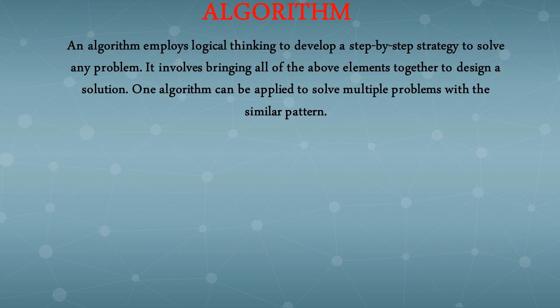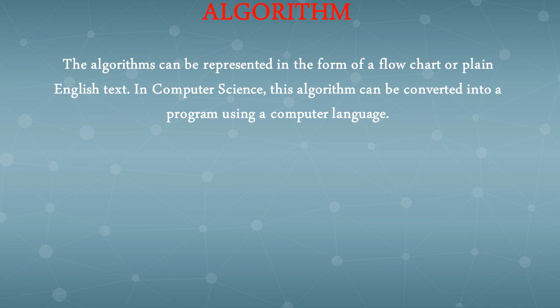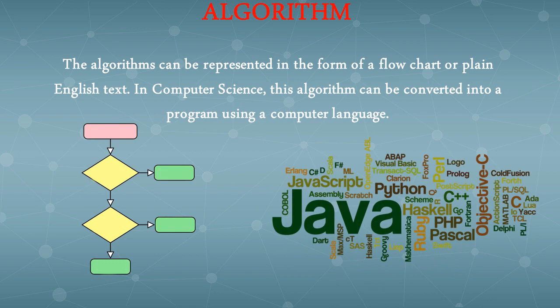The fifth and most important component of computational thinking is algorithm design. An algorithm employs logical thinking to develop a step-by-step strategy to solve any bigger problem. It involves bringing all the above elements — analyzing, decomposition, pattern recognition, and abstraction — together to design a solution. One algorithm can be applied to solve multiple problems with a similar pattern. An algorithm can be represented as a flowchart or in plain English. In computer science, this algorithm can be converted into programs using computer languages such as C, C++, Java, JavaScript, Python, and many more.